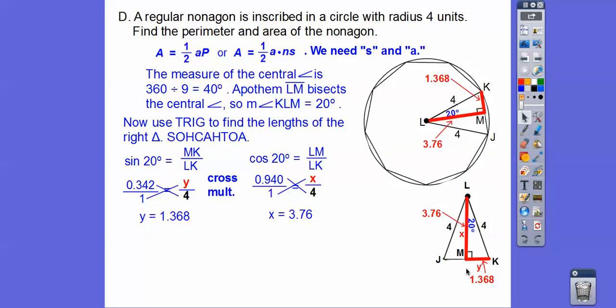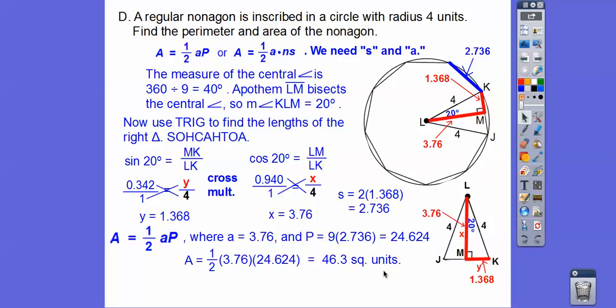When we cross multiply, we find out y. Remember, y is only half the length. We need to find the whole length. So I'm going to double it. But we do know the apothem. The apothem is 3.76. There's the whole side length. That is S. And A is that 3.76. Here's our area formula. The area is one half A times P. The perimeter is 24.624 units. So it did say find the perimeter. The perimeter is 24.624 units. And then the area, we just plug that in right there. And when we get that, we get 46.3 square units.